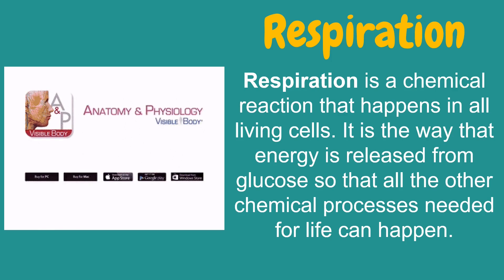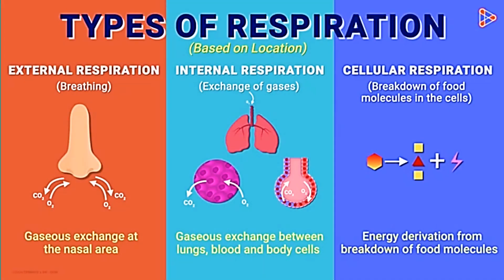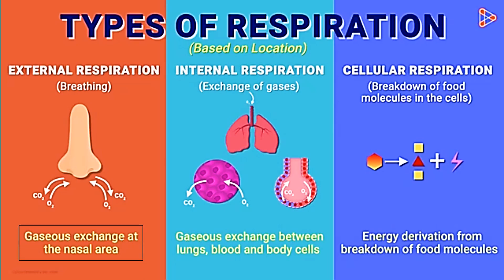What happens in each type of respiration and what makes them different from one another? The types of respiration can be classified based on the location where it occurs. External respiration occurs at the nasal level, where oxygen enters the nasal cavity and carbon dioxide is expelled. This is called external respiration because it involves an interaction with the environment. In other words, external respiration is sometimes used synonymously with the word breathing.